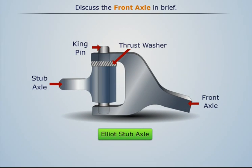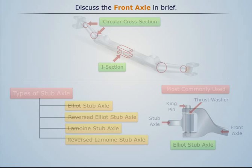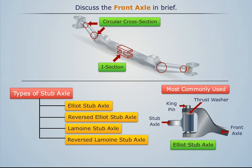Out of these, the Elliot stub axle is most commonly used by manufacturers.